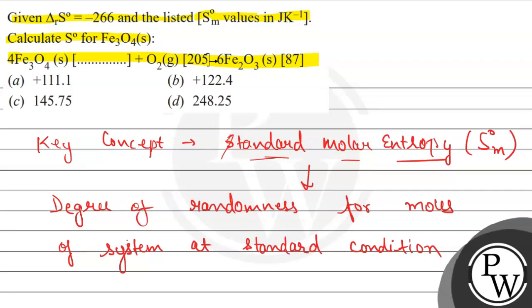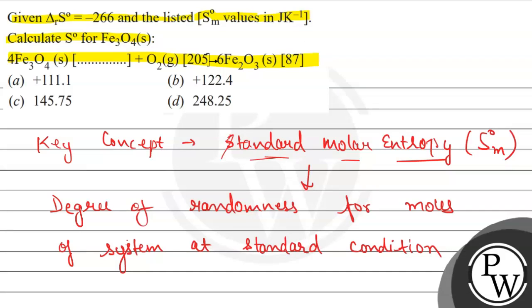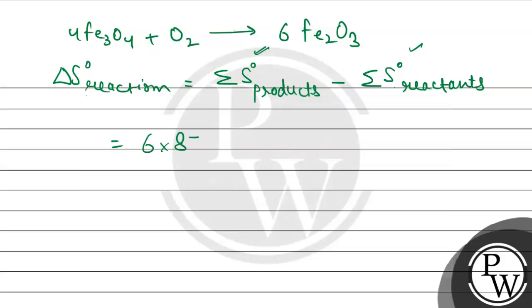Now we will see the reaction which is given to us. The reaction given is 4Fe₃O₄ + O₂ leads to the formation of 6Fe₂O₃. So for this reaction here we can see the product that are six in number, 6Fe₂O₃, so it will be 6 multiplied to the entropy given for this.